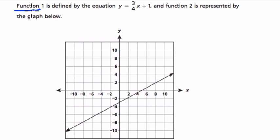So a function is a relationship where every input has one output. In this case, essentially, you can think of the word function just as equation. And this equation right here is a function. It's three-fourths x plus one, and function two is represented by the graph below. So we have a line on this graph right here. Let's take a look at it.